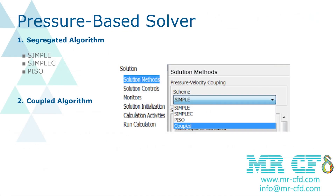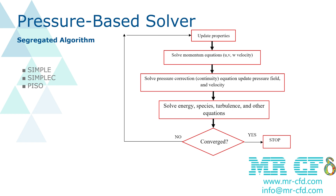There are two algorithms for the pressure-based solver in ANSYS Fluent software. The first is the segregated algorithm, including SIMPLE, SIMPLEC, and PISO. The other is the coupled algorithm. In the segregated method, the governing equations are solved one after the other, which reduces memory usage due to the serial nature of the equation solution, but also reduces the speed of convergence.